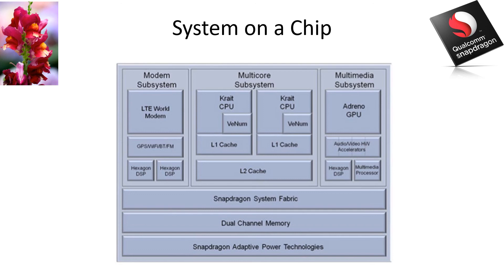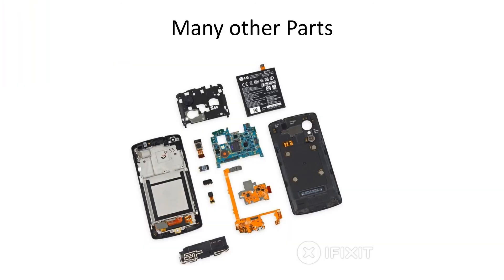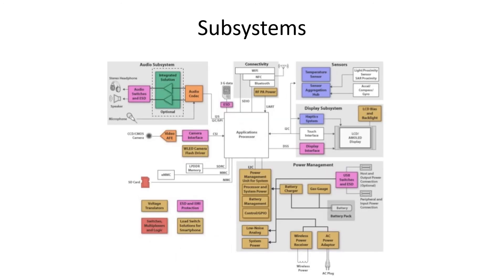ARM systems have been designed into larger chips and have all sorts of additional subsystems on them. Here's an example of the Qualcomm Snapdragon, which has networking, GPU, and other features on the chip along with the ARM processors. Of course, phones have all sorts of other parts and subsystems.